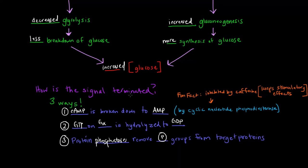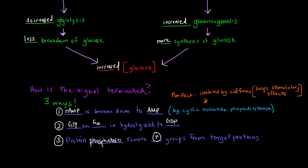As far as how is this signal terminated, same thing as what we did with epinephrine. Cyclic AMP is broken down to AMP by this particular enzyme here. And the GTP on the G-alpha subunit is hydrolyzed to GDP. And then the protein phosphatases remove phosphate groups from target proteins. All of these contribute to termination of the signal.